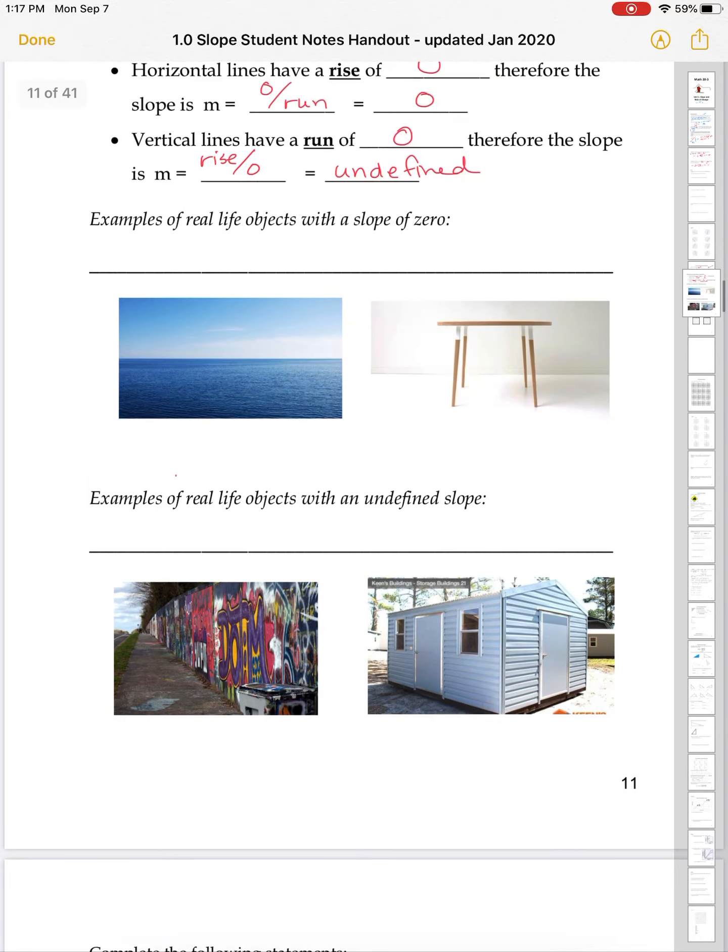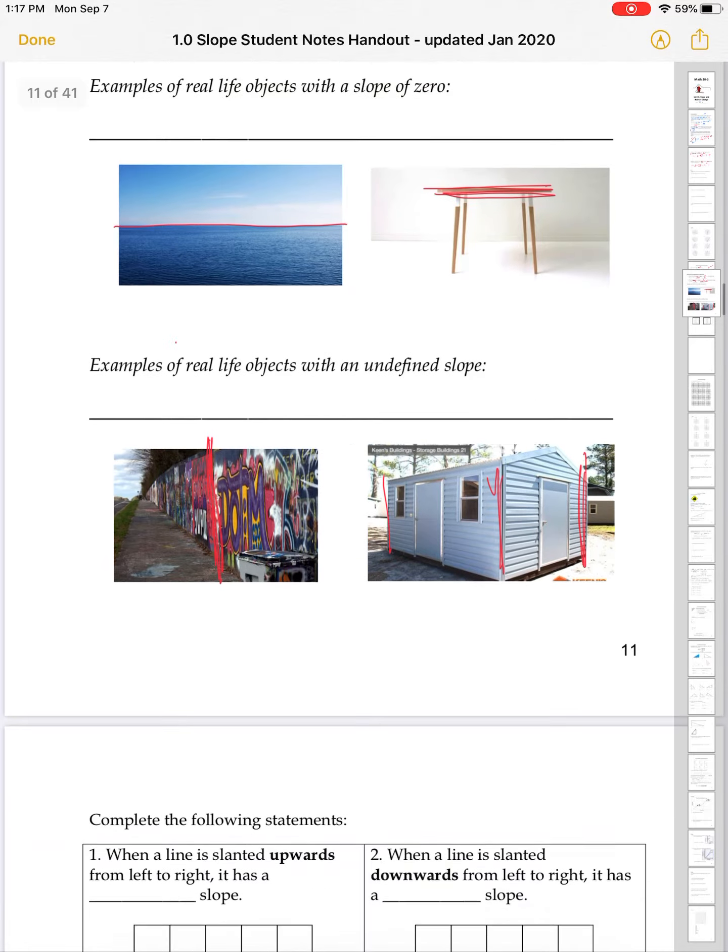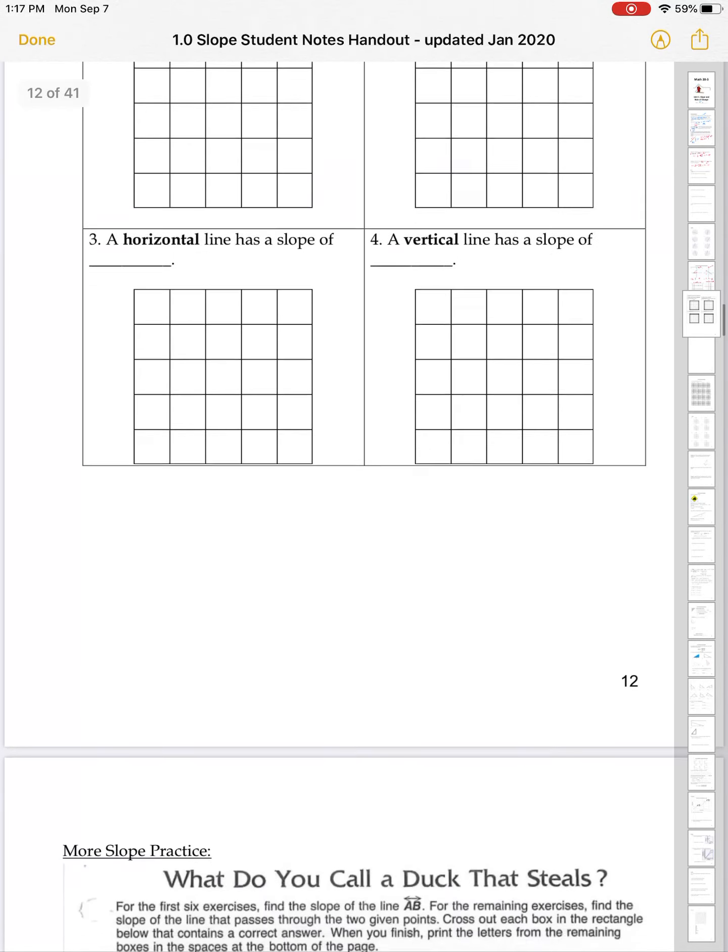So let's look at some real-life objects with slopes of 0. Here we have a nice horizon line. Horizontal horizon line. A table, if it's done right, is going to be nice and flat. Undefined, a wall, or a wall of a house, is going to have this nice, straight, up and down, undefined slope. So you can find these naturally enough, and that's how they work.